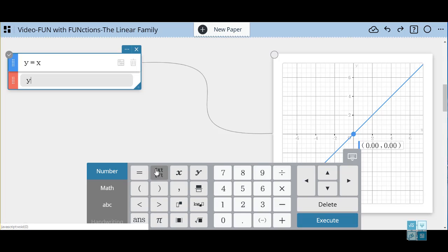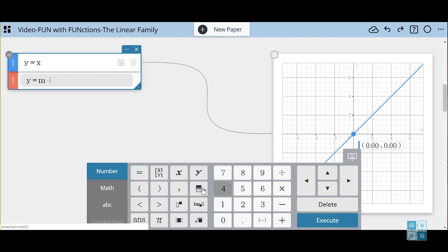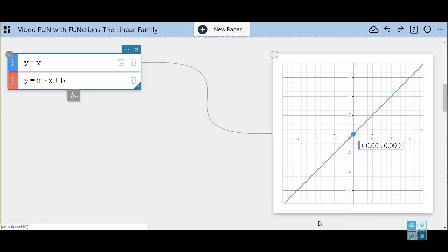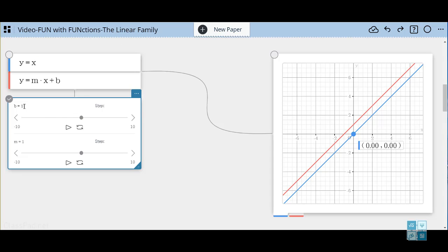So let's type in a new function, Y equals M times X plus B, the slope-intercept form equation. And notice what appears below the equation. We have some sliders that indicate the values of B and M respectively. So right now what we'd like to do is change the value of B to 0 so the red line overlaps the blue.